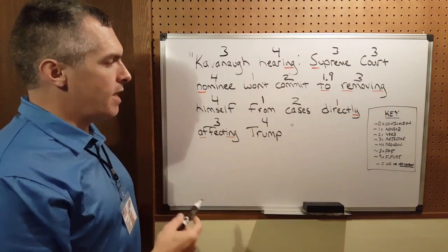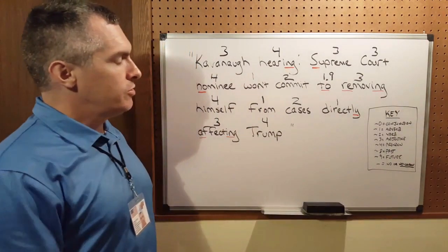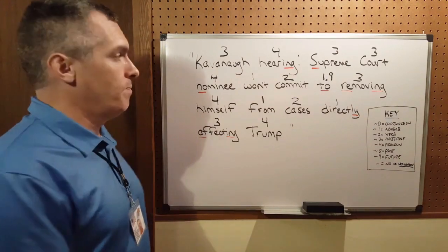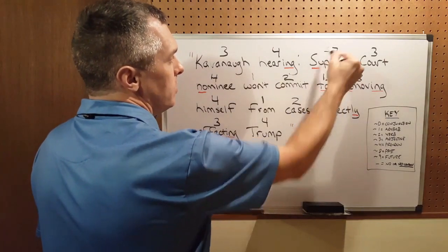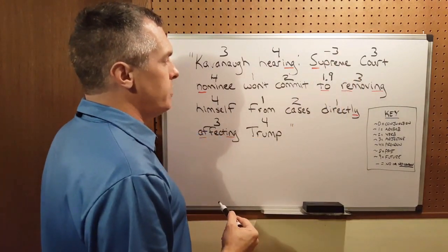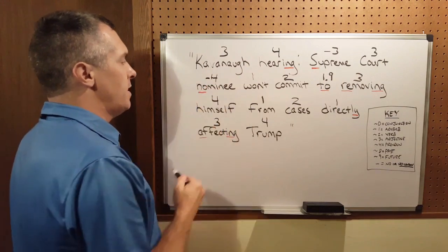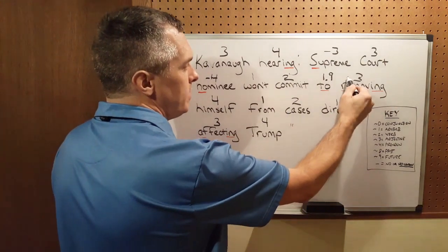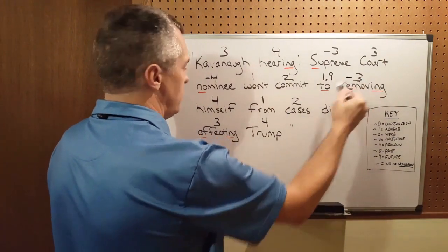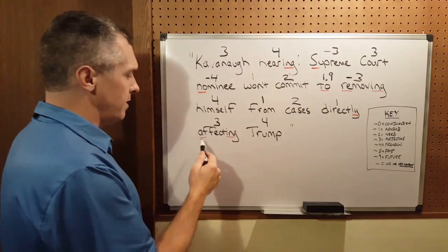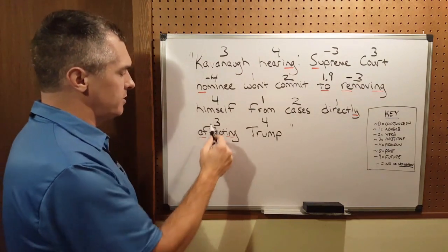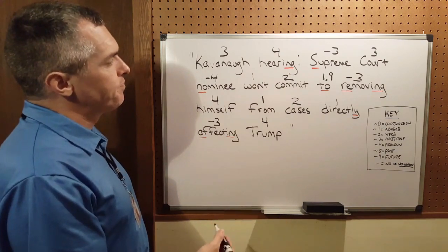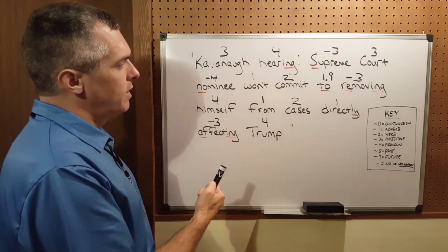Now to go deeper into that, I will add a negative to some of the words that have poison prefixes — to my knowledge, prefixes which mean no. So the 'SU' would mean no — that's a negative 3 now. There's a 'no' in 'nominee' — I'll give that a negative 4. 'Removing' — 'RE' means no — that's a negative 3. And 'affecting' — a vowel in two consonants at the beginning of a word — that is a negative 3. And so that's a brief look at syntax.